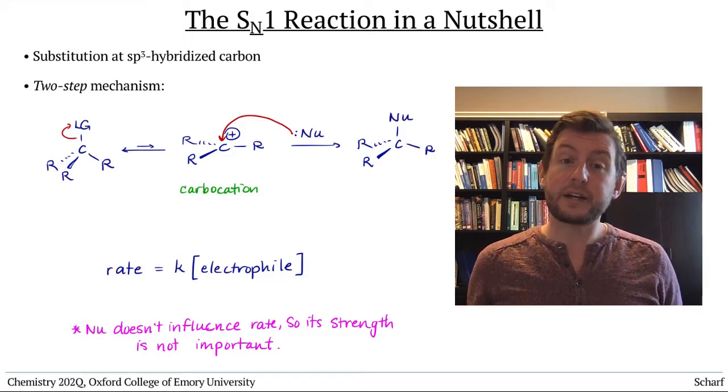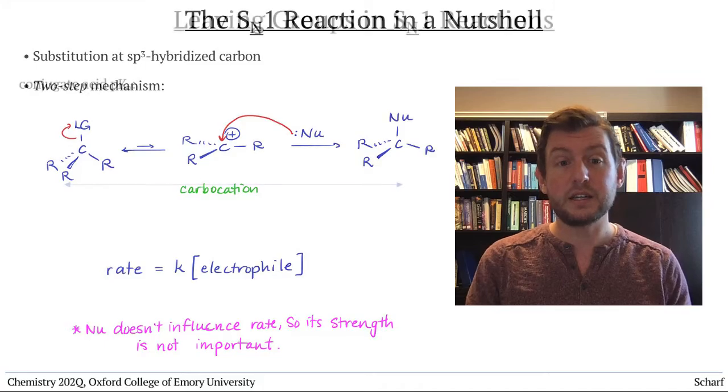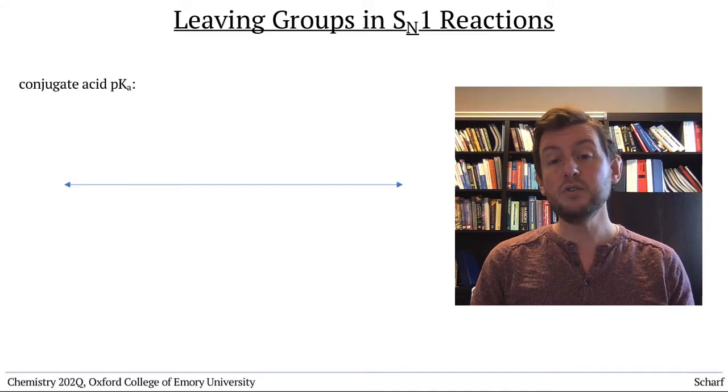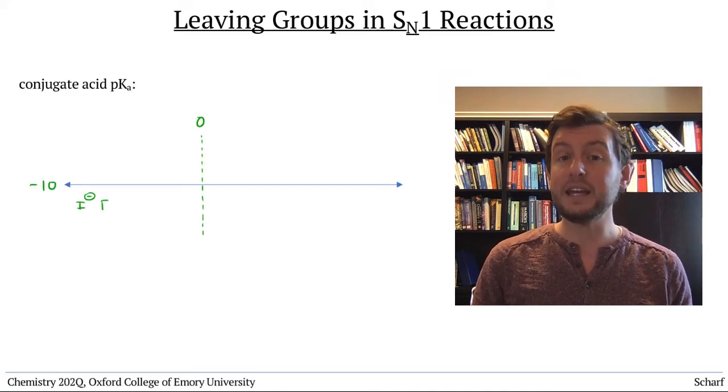While the nucleophile doesn't matter very much in the SN1 reaction, the electrophile does. It needs to have a very good leaving group. For SN1 reactions, this usually means the leaving group's conjugate acid needs to have a negative pKa.